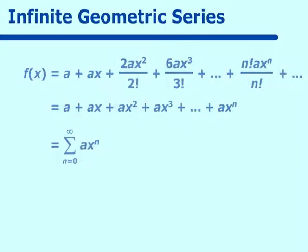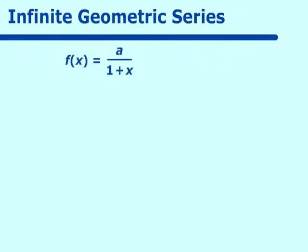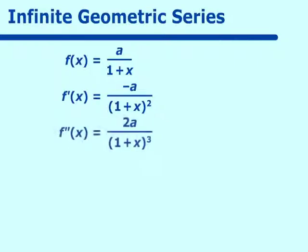Now, f(x) is equal to A over 1 plus x. The only difference between this one and the last one is that the negative between the 1 and the x has been changed to a positive. How does this affect our Taylor series centered about 0? So f(x) equals A over 1 plus x. F prime of x equals negative A over (1 plus x) squared. F double prime of x equals 2A over (1 plus x) cubed.